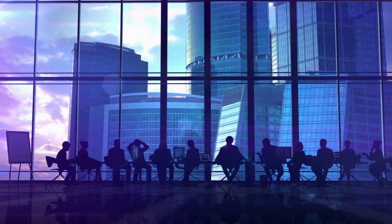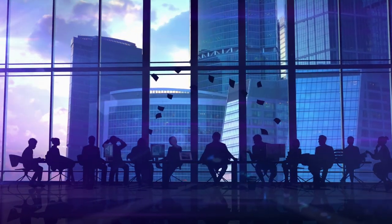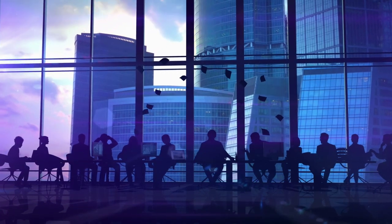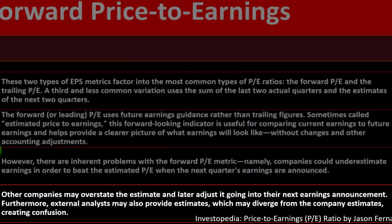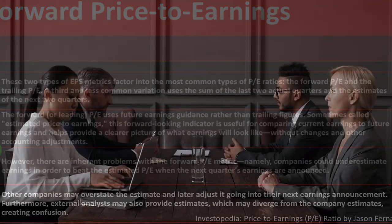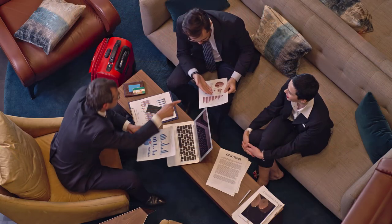Management projections create conflicting incentives. One objective is they don't want to miss their target — that looks bad — so they might make a low-ball estimate they can clear easily, making them look good. On the other hand, they may also overestimate in order to appear strong, generate valuation bumps, and spark a positive cycle. Furthermore, external analyst estimates may also diverge from company estimates, creating additional confusion about whose projections are most accurate.